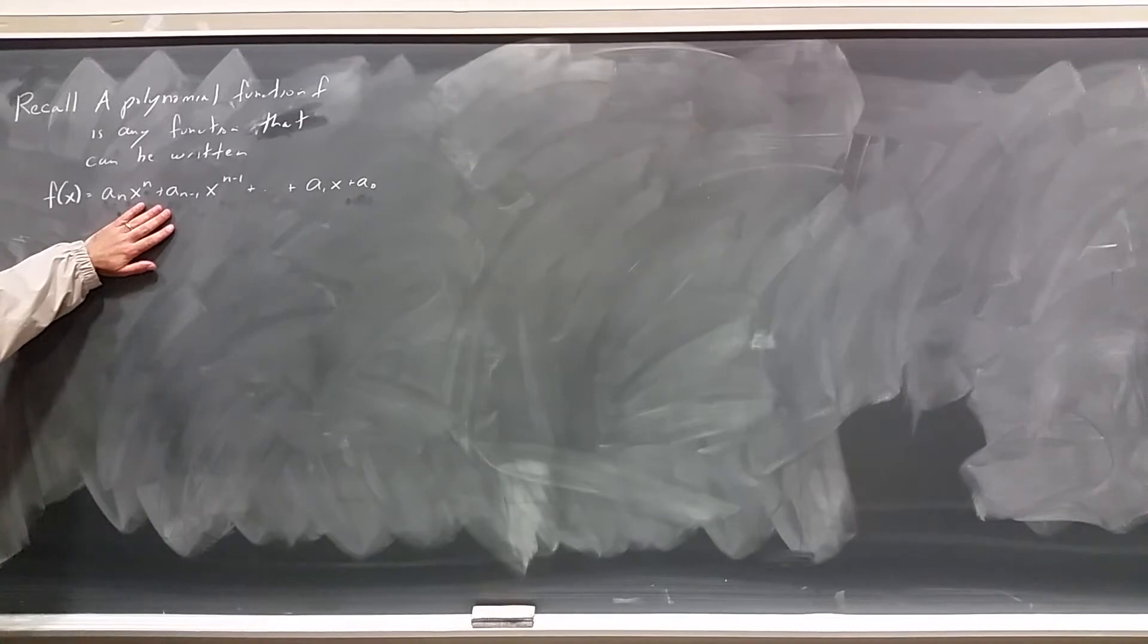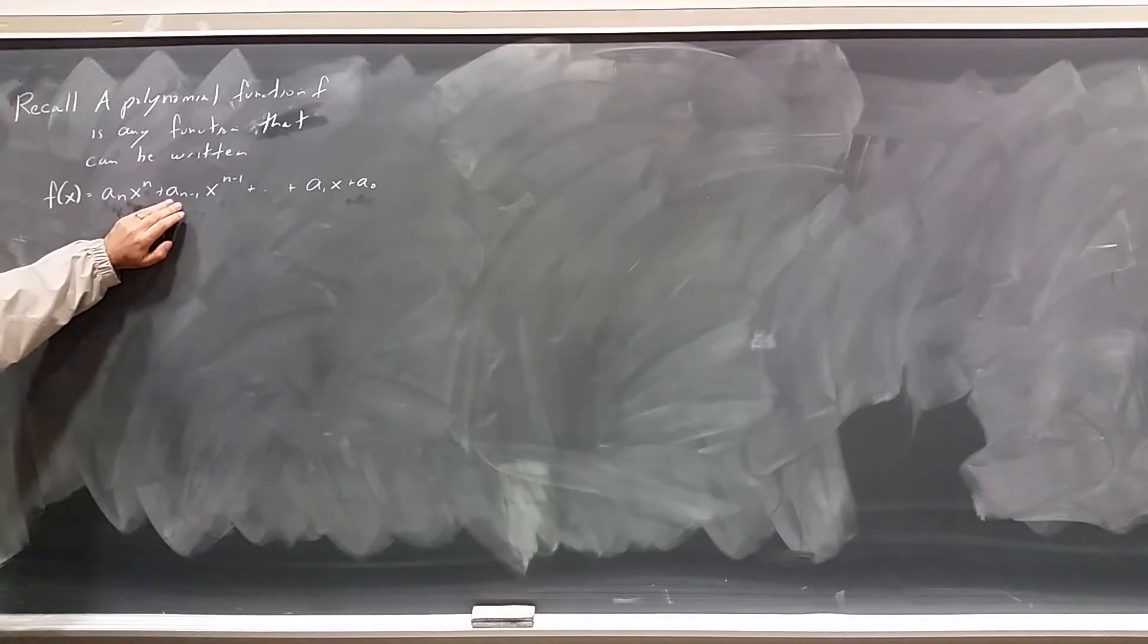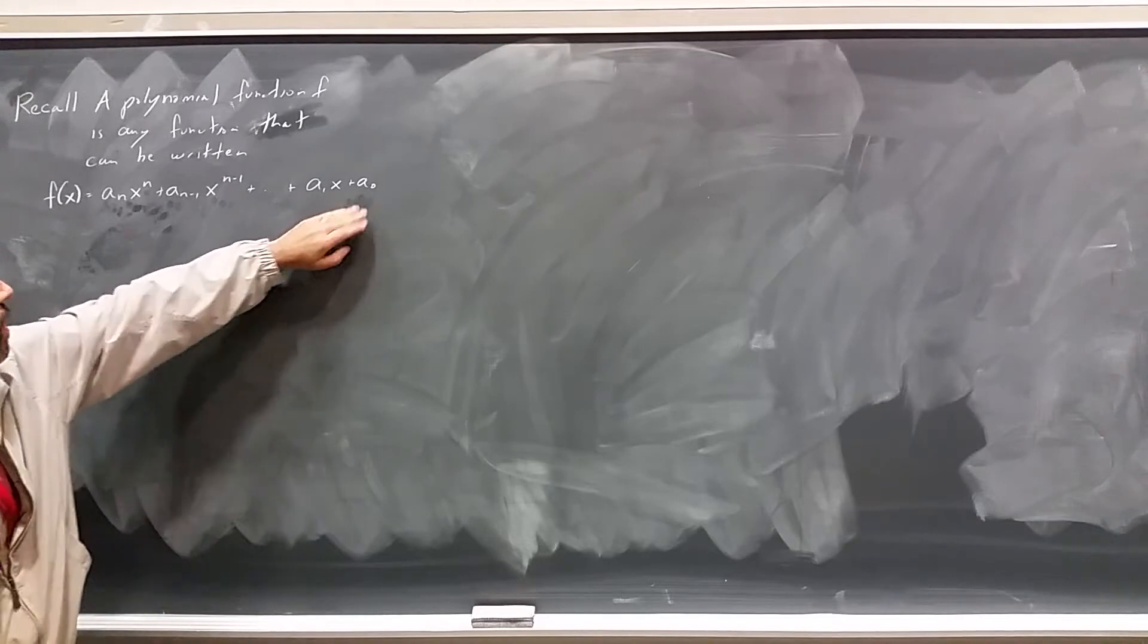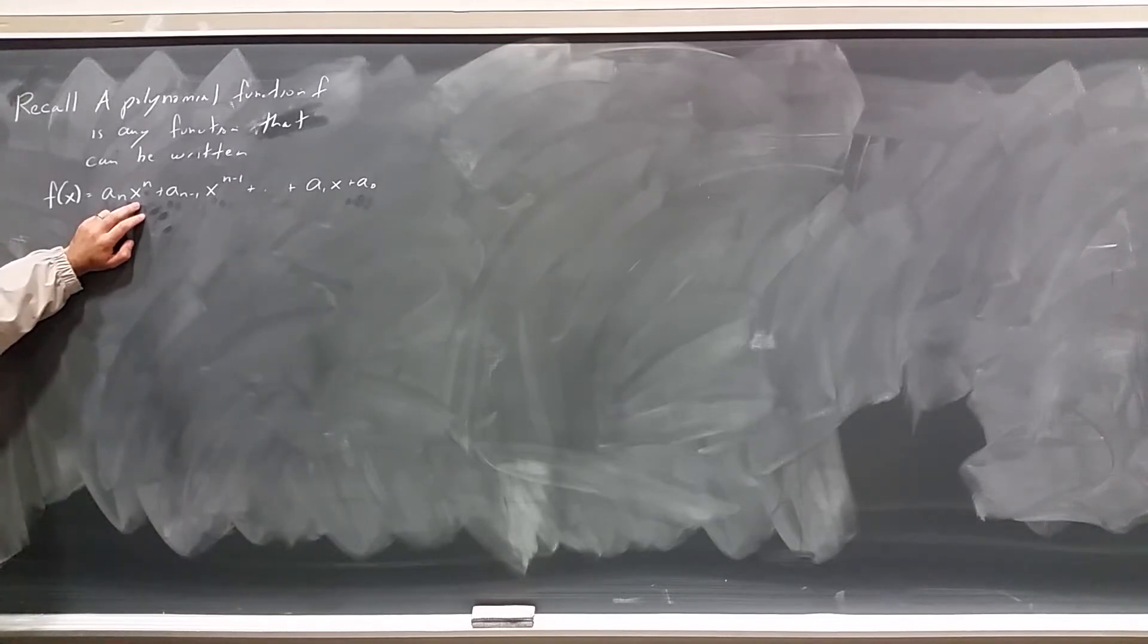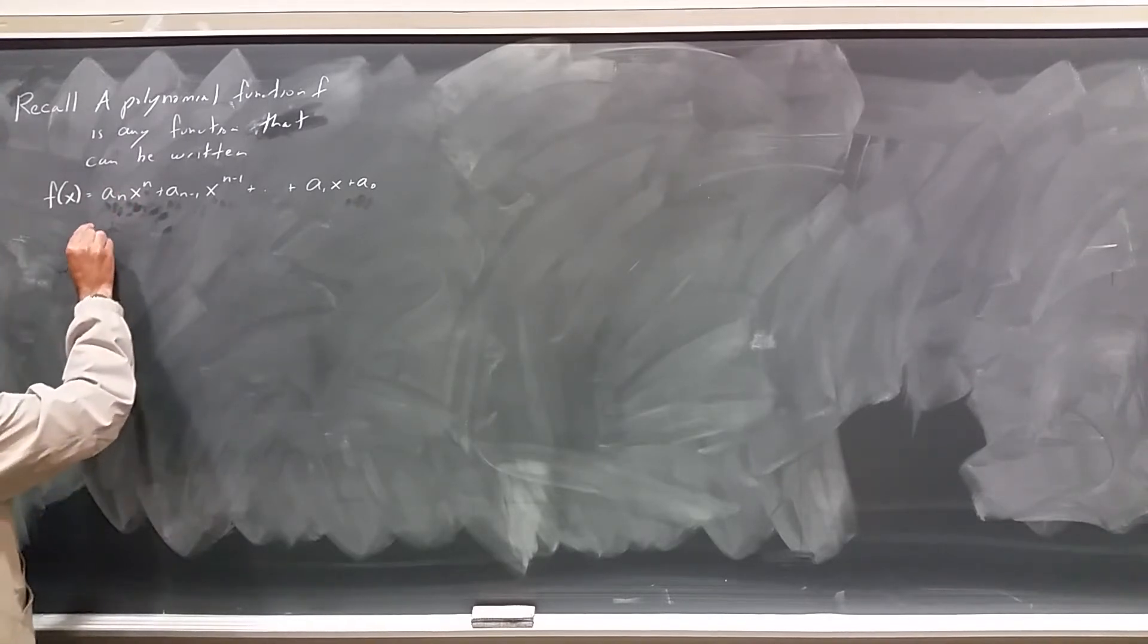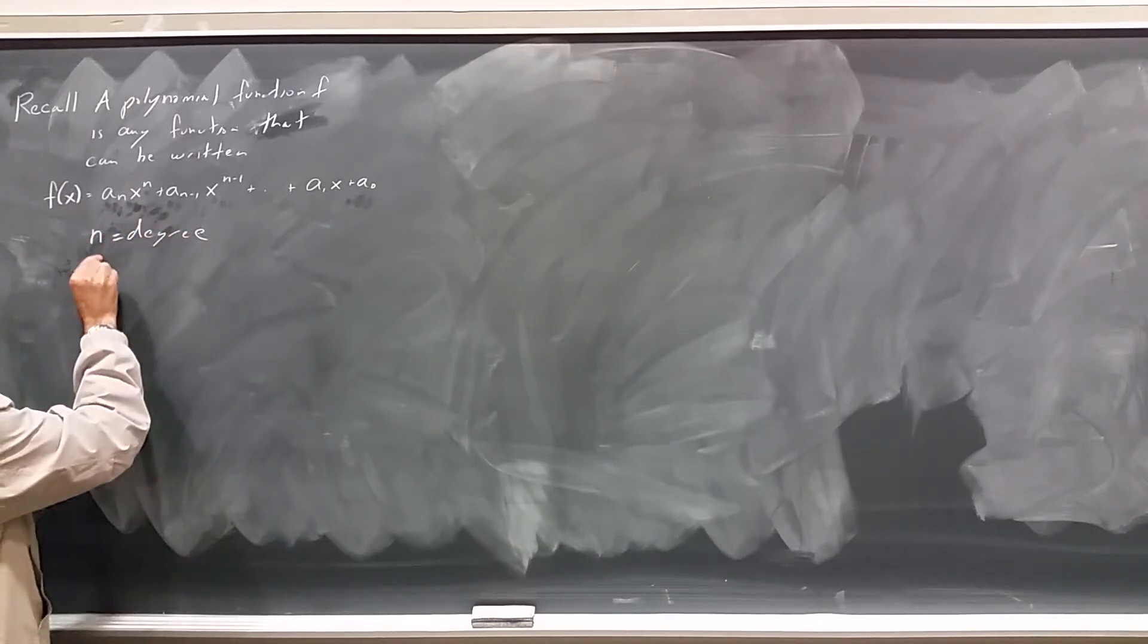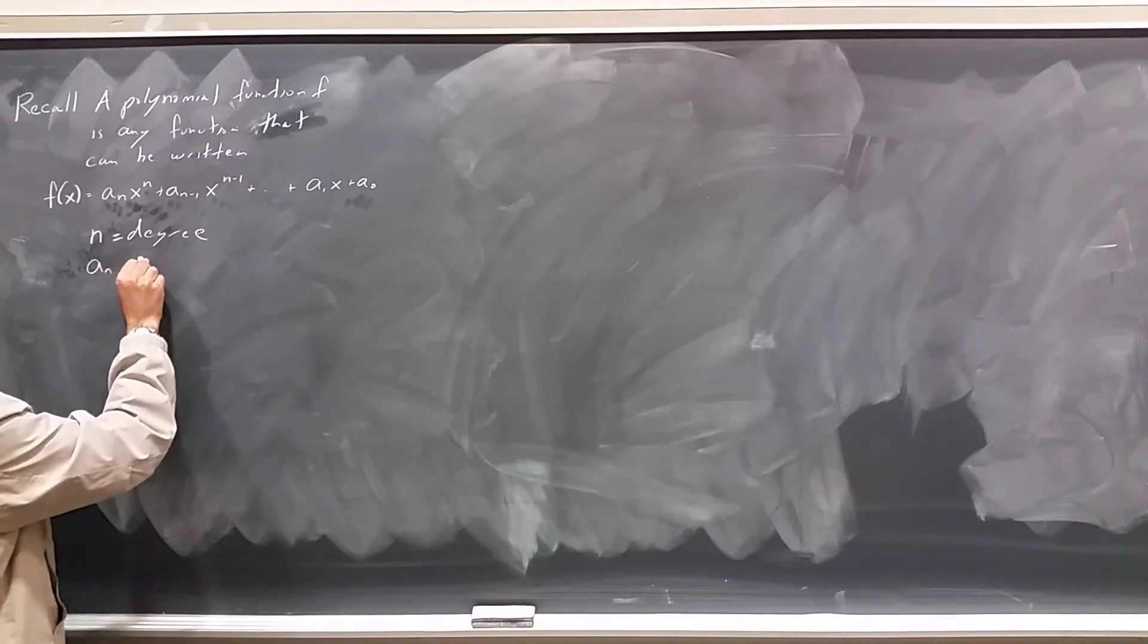Let's recall that a polynomial function is any function that can be written in this form: aₙ times x to the n plus aₙ₋₁ times x to the n minus 1 plus all the way down to a₀. The largest power of x we call the degree, and the coefficient in front of the largest power of x is called the leading coefficient. So n is called the degree, and aₙ is called the leading coefficient.